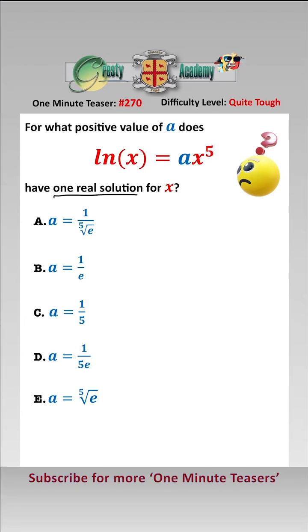To have one real solution we need both the gradient and the value at the gradient to be the same. So differentiating here we have 1 over x must equal 5a x to the 4, i.e. we have that x to the 5 equals 1 over 5a or x is equal to the fifth root of 1 over 5a.